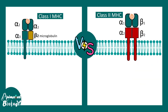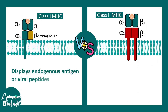Class 1 and class 2 MHC molecules display different types of antigen. Class 1 displays generally endogenous antigens or sometimes viral peptides. Class 2 MHC molecules generally display exogenous antigens or pathogen-derived antigens.